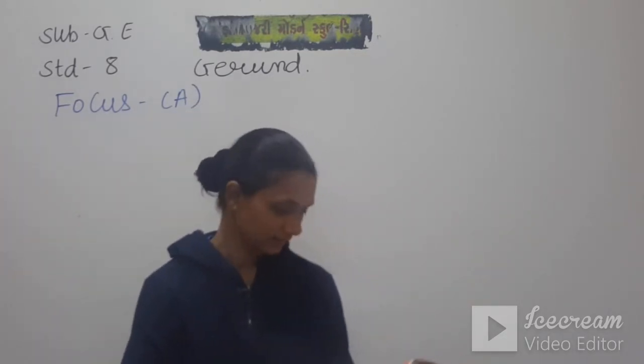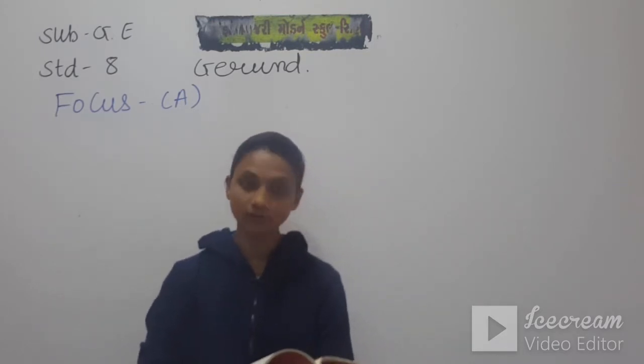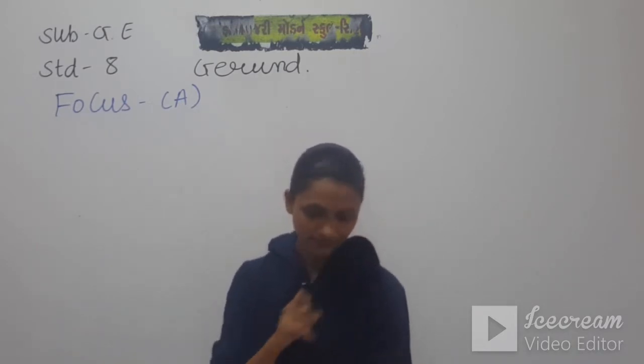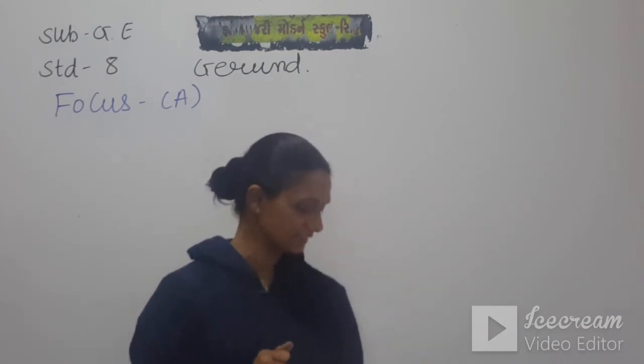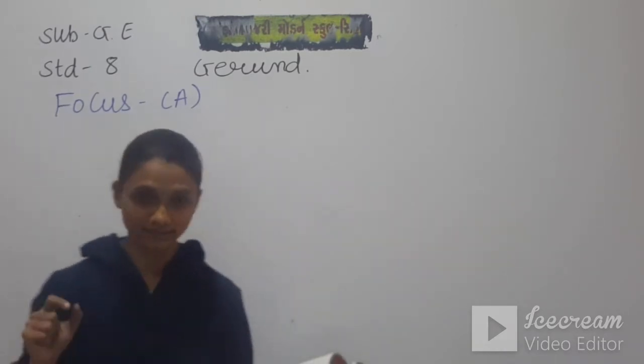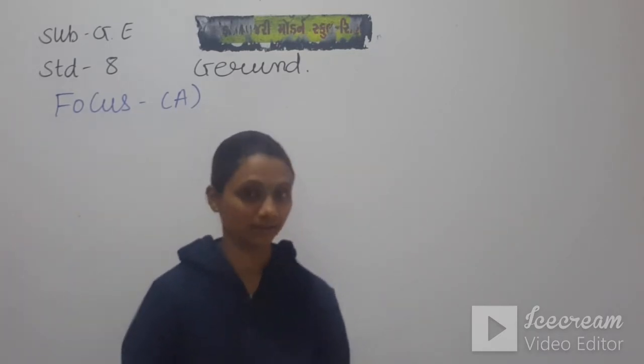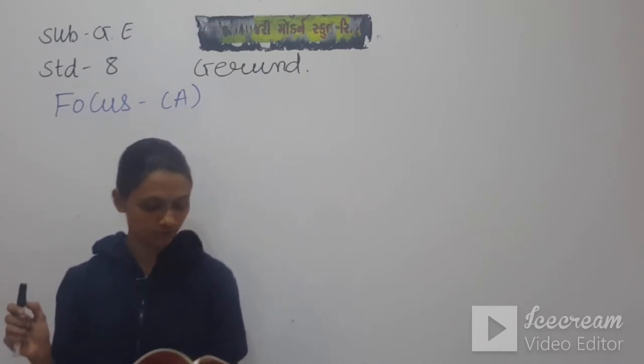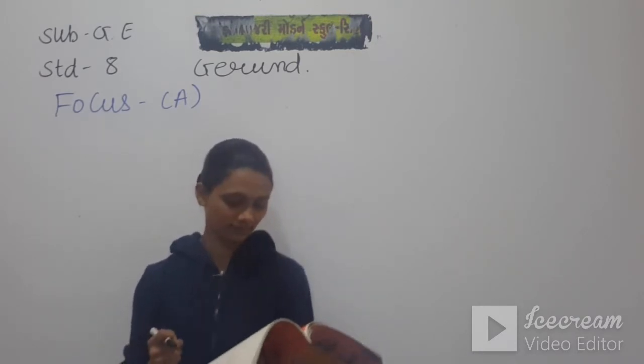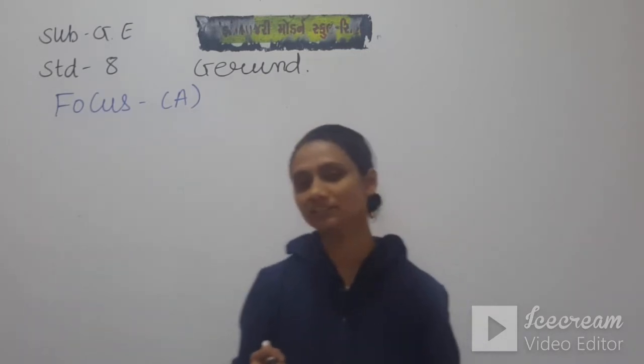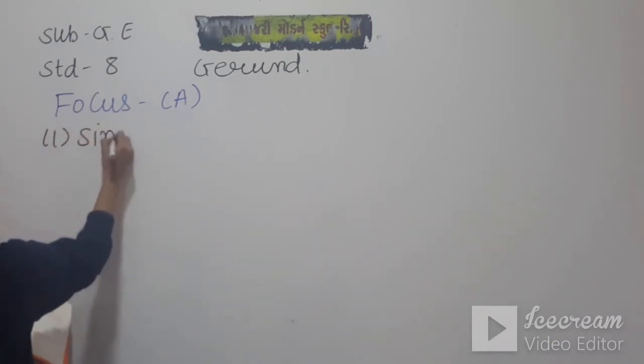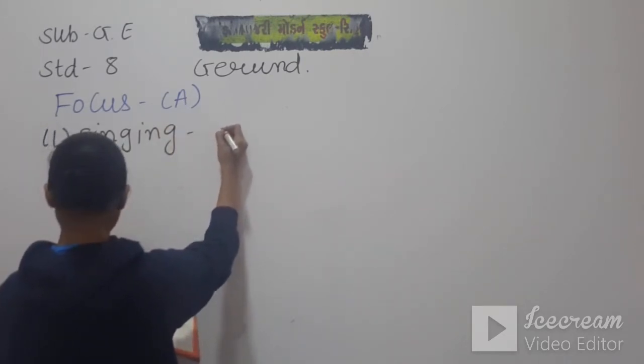The instruction is: for each of the following sentences decide if the word or phrase in bold is a participle, a gerund, or an infinitive. Ten sentences are given and in those sentences bold words are mentioned. We have to identify whether those bold words are gerund, infinitive, or participle. First is: the choice singing woke me up. Our bold word is singing, so this singing is a gerund.